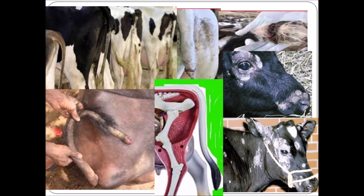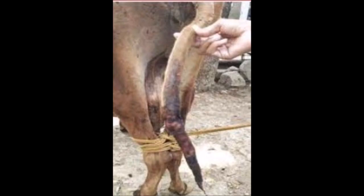उपाख्यानों और विभिन्न वैज्ञानिक रिपोर्टों से पता चलता है कि भारतीय मवेशियों में शुष्क या सर्दी के मौसम में पूंछ में कुछ प्रकार के जीवाणुओं की संक्रमण के कारण पूंछ संबंधी बीमारियां अधिक होती हैं।